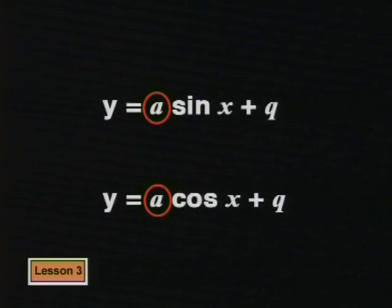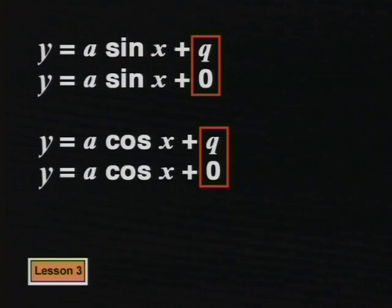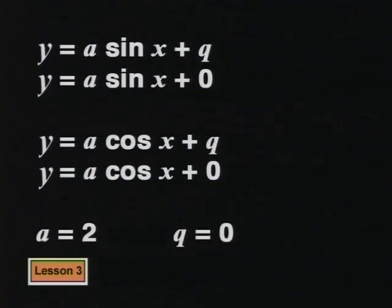First, we will look at how changing the a values changes the graph. To make our investigation easier, we will keep the q value at 0. Then we can be sure that any changes we see in the graphs are caused by the changes we make to the a value. We will begin by making a equal to 2 in both the sine and the cosine functions.